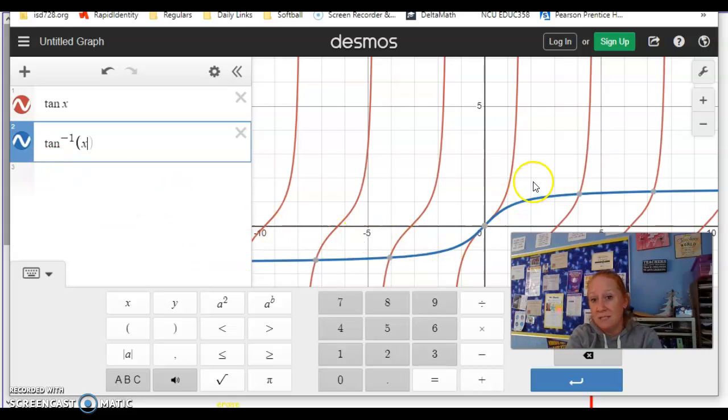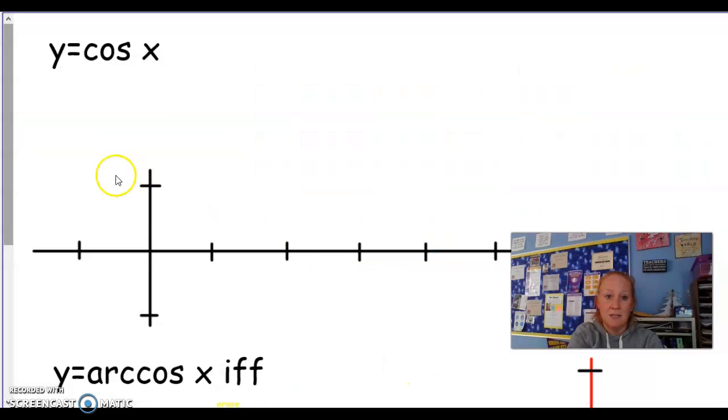Do you see that it only happens one time? Because I'm just working from -π/2 to π/2. So let's go back into the notes and see what that looks like.